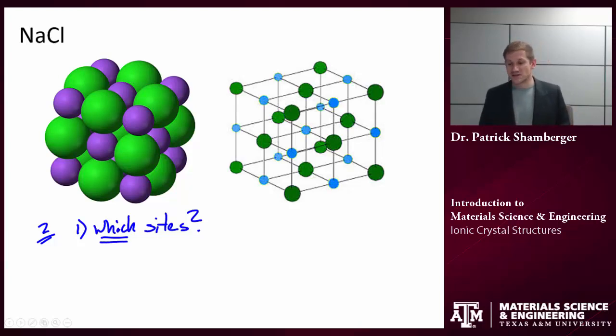That comes down to the relative size of the two different materials. The second point is how many? How many of those sites are occupied? This ultimately comes down to the stoichiometry, how many anions per cation.